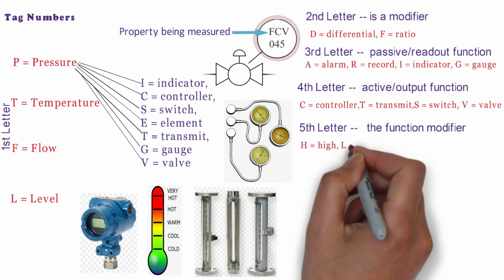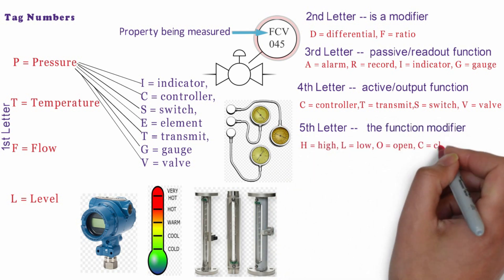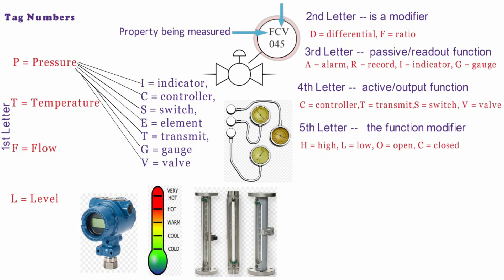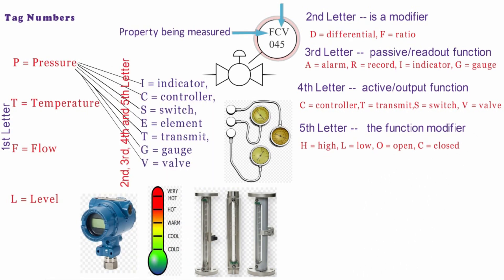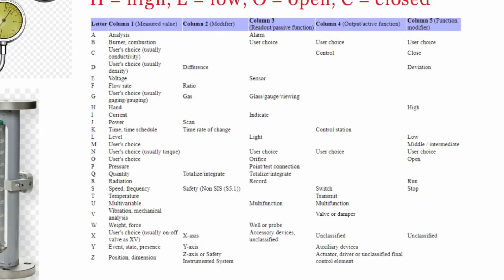Fifth is the function modifier. Like H is for high, L is for low, O is for open, C is for closed. We can simply omit these if no modifiers apply.